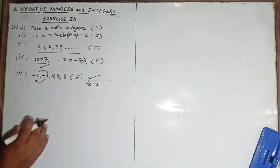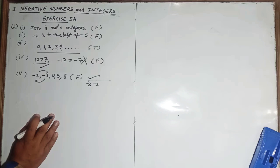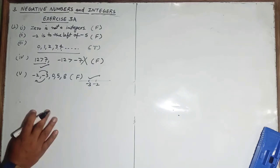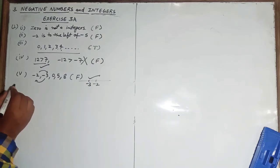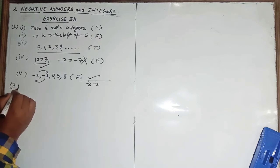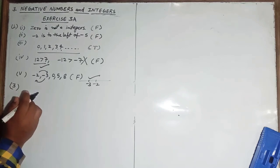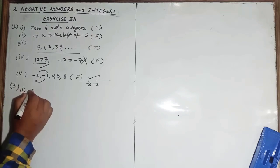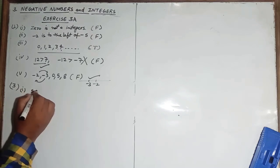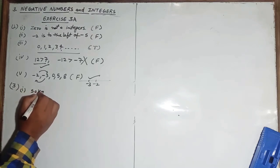Question number two is fill in the blanks — you will try that on your own. Now question number three: write the opposite of the following. First statement is: 50 kilometers south.